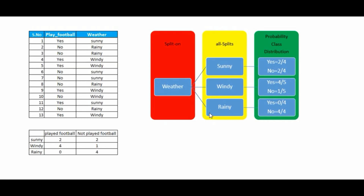In decision trees, we make the split of data based on the features available. The data remaining after the splits, or the output of these splits, are called nodes. Nodes where we get only one class — either all yes or all no — like in the case of rainy where we are getting only no's, these are called pure nodes, because splitting further on this node is not possible.